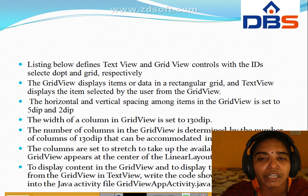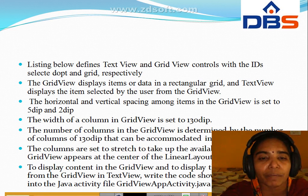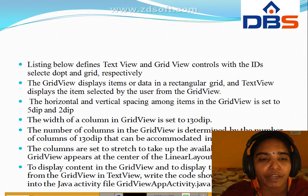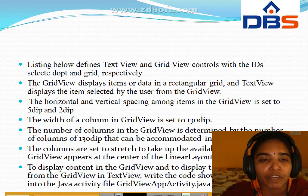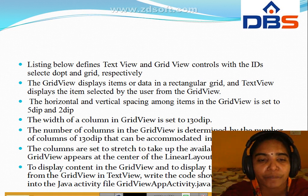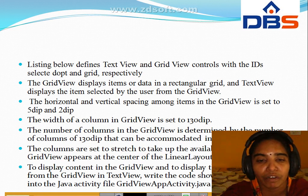The horizontal and vertical spacing among items in the grid view is set to 5 dip and 2 dip. The width of the column in the grid view is set to 130 dip. The number of columns in the grid view is determined by how many columns of 130 dip can be accommodated in the available space. The columns are set to stretch — meaning expand — for the available space.